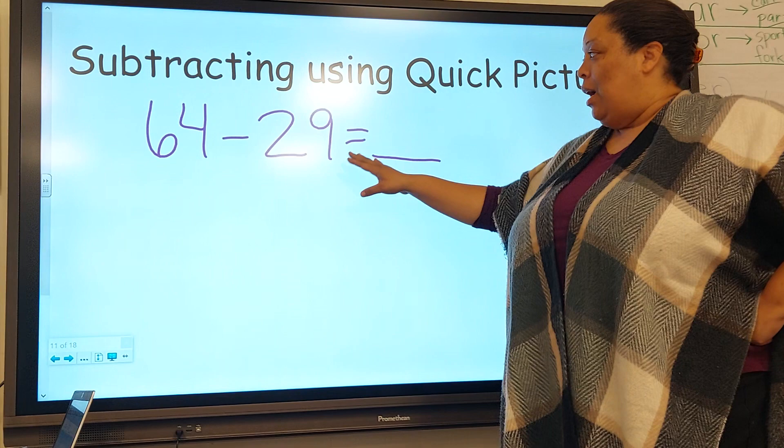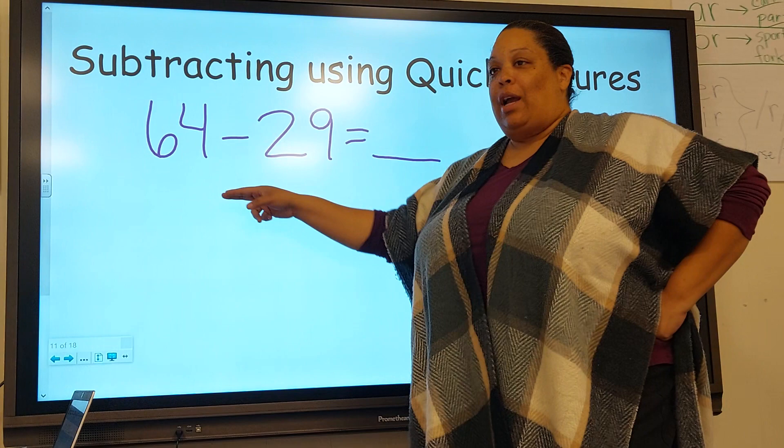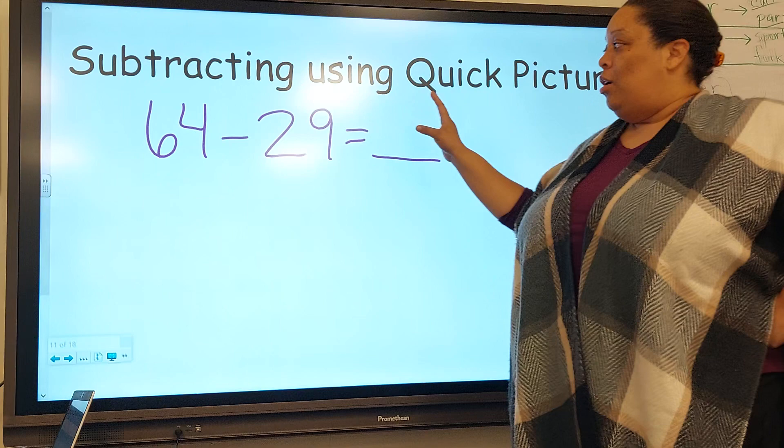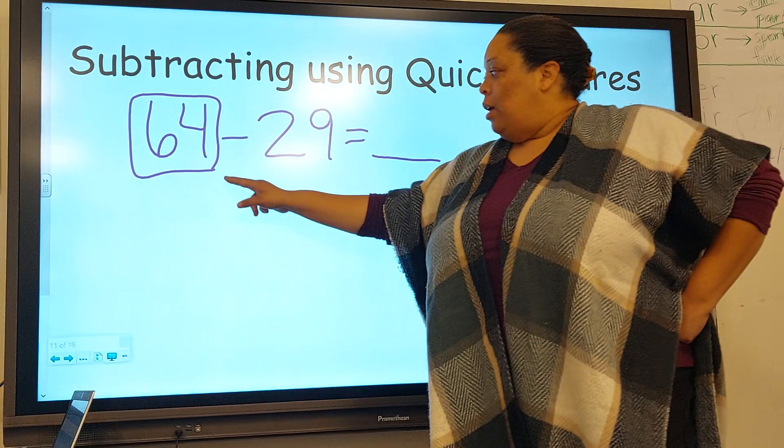Here we have 64 minus 29, and we're gonna figure that out. Now, in subtraction, the first thing to remember is the only quick picture we draw in subtraction is the big brother.